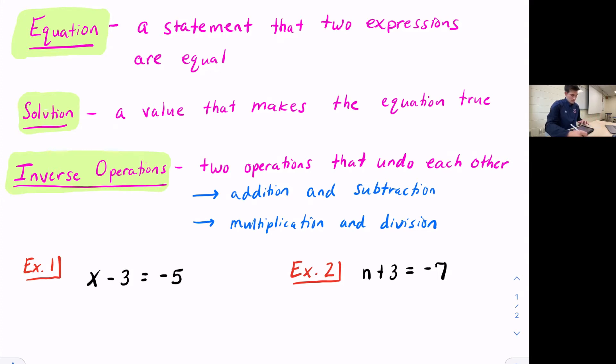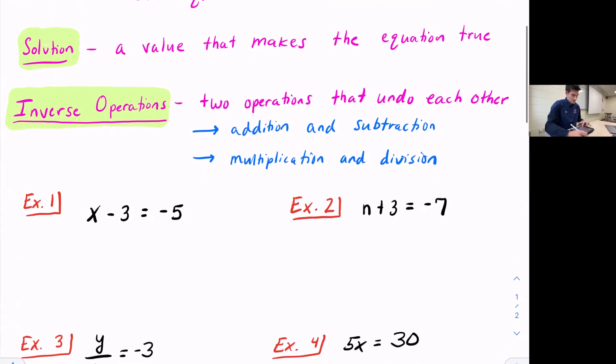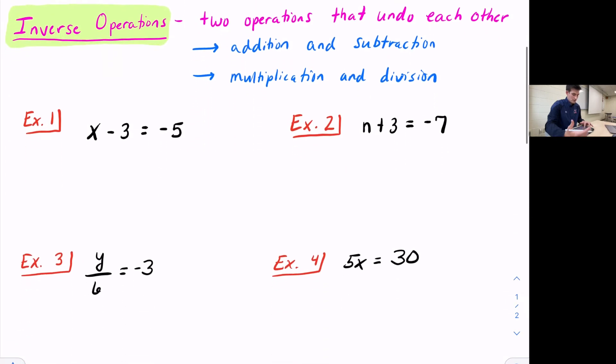So we'll look at a couple of examples here, and what I like to ask myself is what is happening to x? And whatever is happening to x, we just want to undo that. So we look at example one, we see x minus three equals negative five. So what's happening to x? Well, x is having three subtracted from it. So we need to add three so that x is isolated or x is by itself on one side of the equal sign.